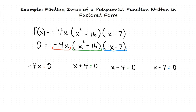Now we solve for x in each of the factors to find the real zeros of f of x. Let's start with negative 4x equals 0. We divide both sides of the equation by negative 4 and we find that x equals 0 is our first real zero. Now let's move on to x plus 4 equals 0. We subtract 4 from both sides and our answer is x equals negative 4.